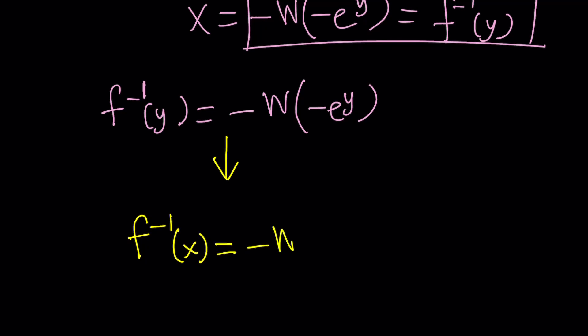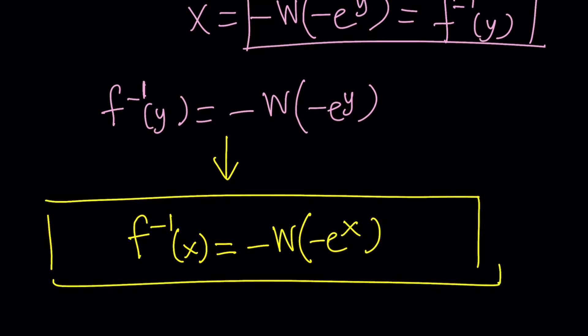Hey, this is going to work. We can just write f^(-1)(x) as -W(-e^x). So, that will be the inverse function for ln(x) - x.